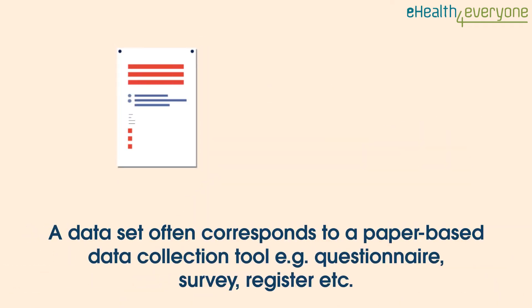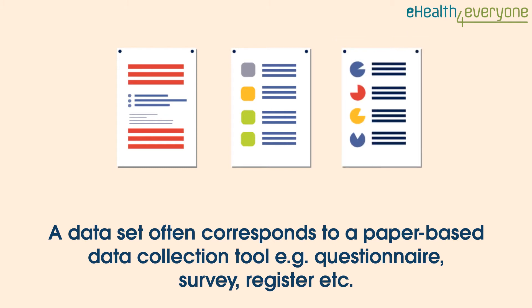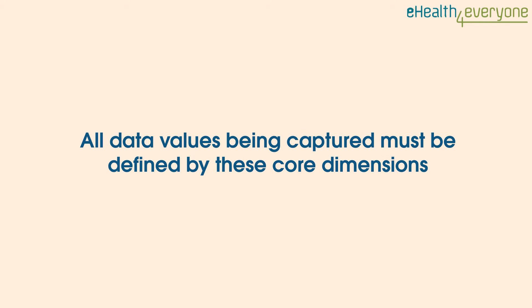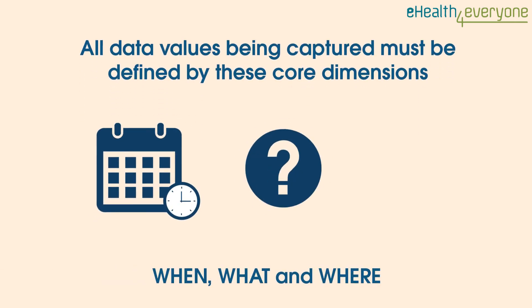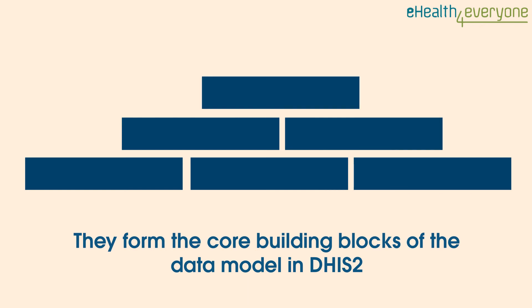A data set often corresponds to a paper-based data collection tool, for example, a questionnaire, a survey, or a register. All data values being captured must be defined by these core dimensions. They are the when, the what, and the where. These three form the core building blocks of the data model in DHIS2.